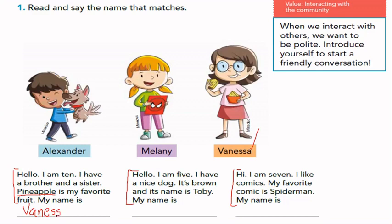Good, great job. Vamos con el siguiente. Hello. I am five. I have a nice dog. It's brown and its name is Toby. My name is... ¿Quién tiene a nice dog? Great job. Alexander. Aquí escribimos Alexander. Good job. Next: Hi. I am seven. I like comics. My favorite comic is Spider-Man. My name is... It's Melanie, because she has in her hands a comic about Spider-Man. Good job.